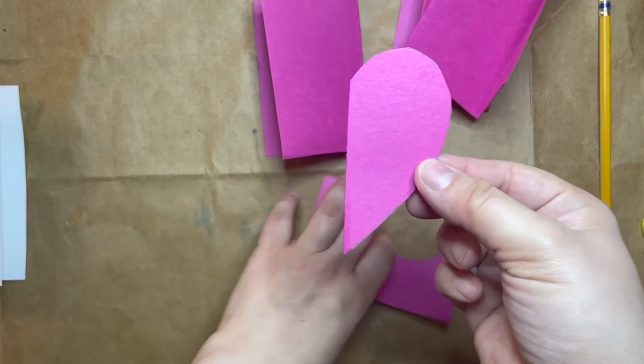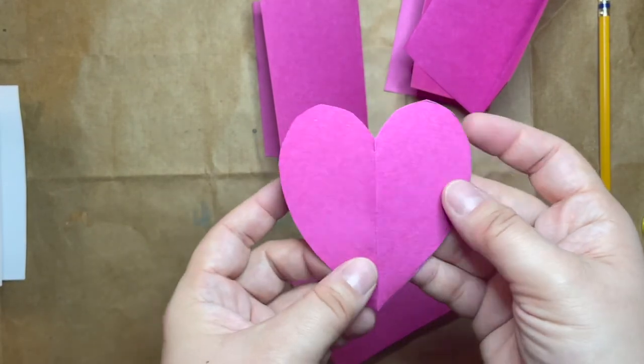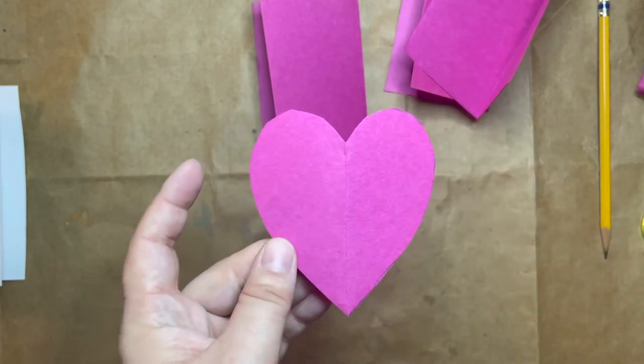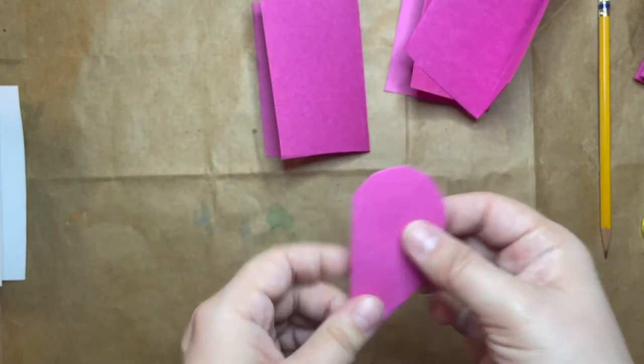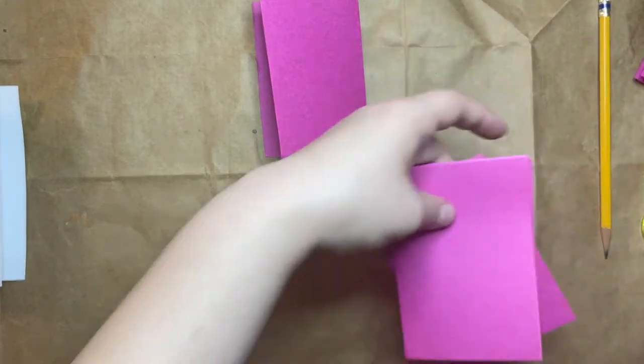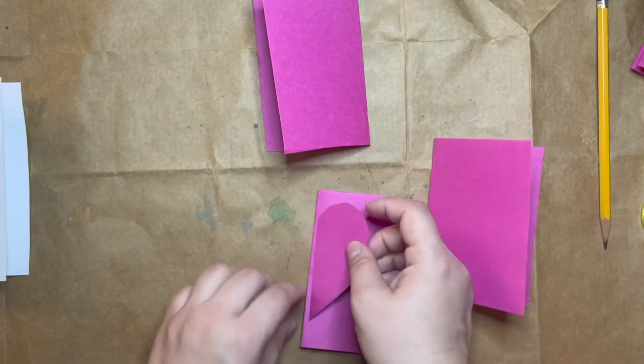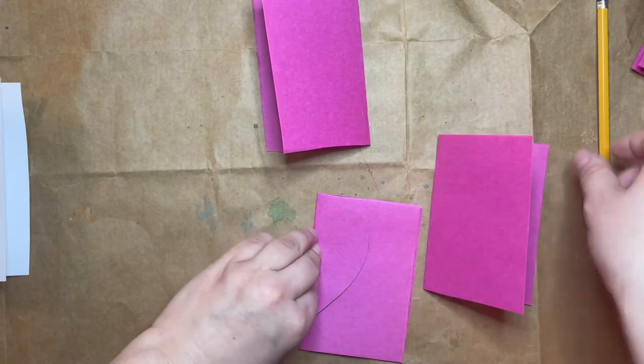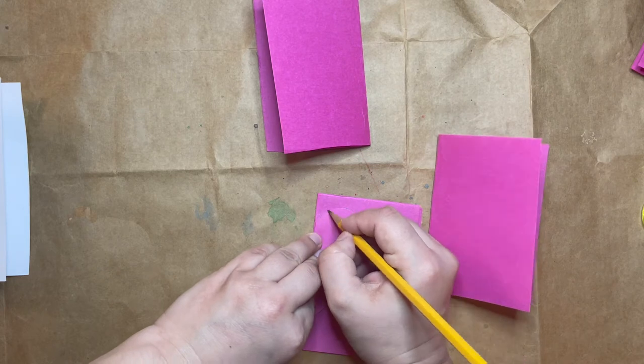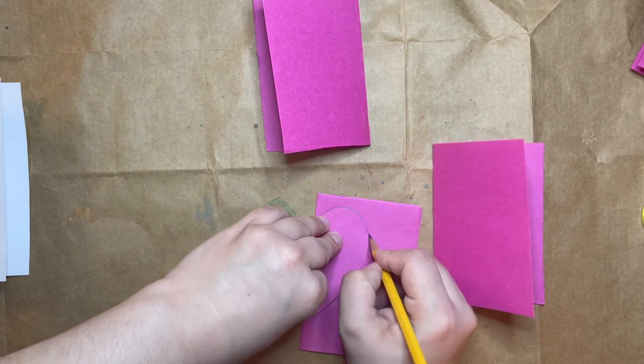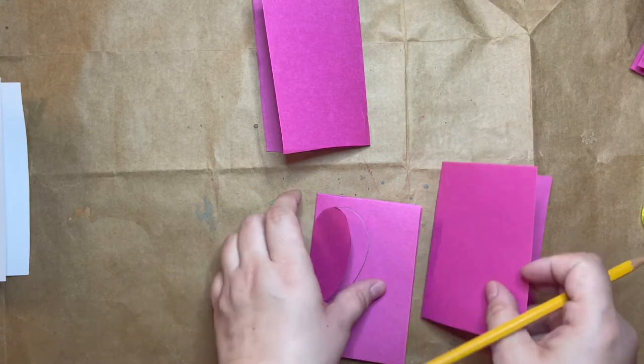So that's kind of the shape of half a heart. And when I open it up, you can see there's the full heart. I'm going to fold this in half again, and I'm going to use this and trace all of my hearts on my other paper so that they're all the same size.